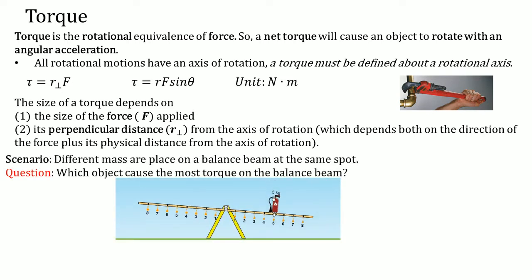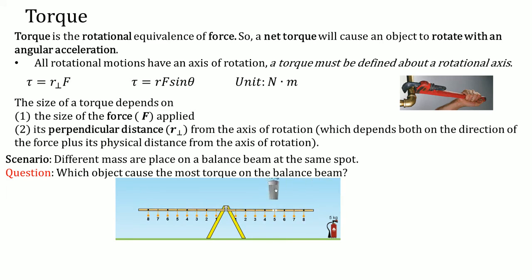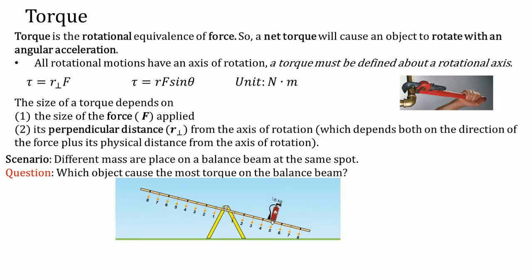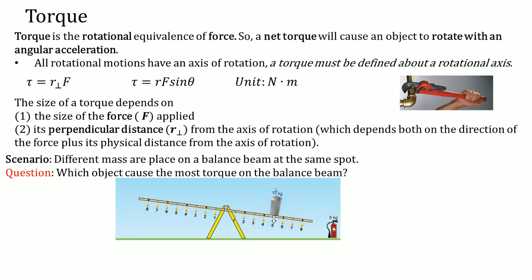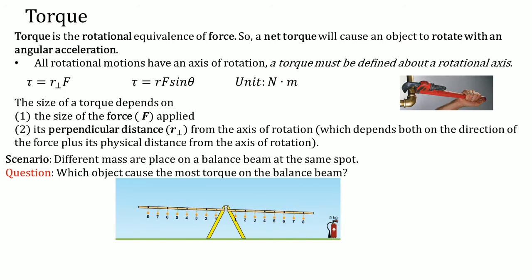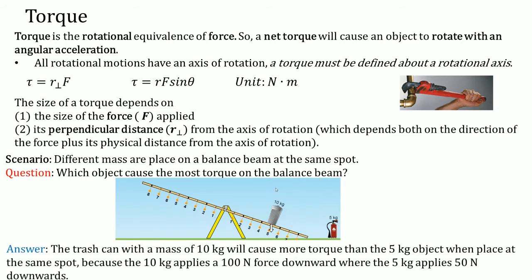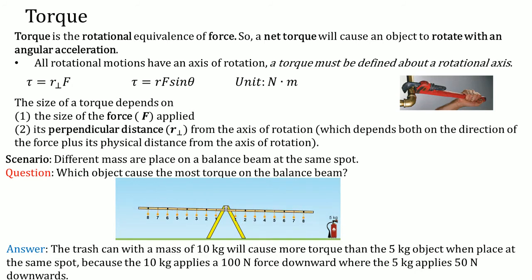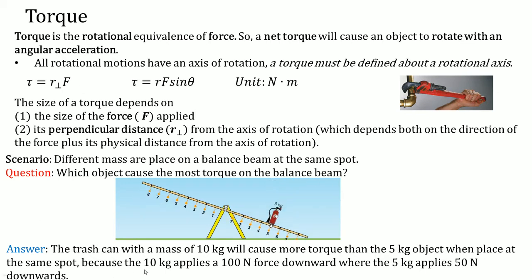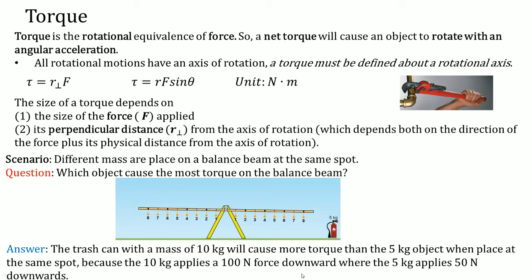Different masses are placed on a balance beam at the same spot. Which object will cause the most torque on the balance beam? The trash can placed at 10 kilograms is causing the balance beam to turn differently than the fire extinguisher, which is at 5 kilograms. At 10 kilograms it turns quicker — it has a larger angular acceleration — but the 5 kilogram causes a smaller angular acceleration. So you would say the trash can with a mass of 10 kilograms will cause more torque than the 5 kilogram object when placed at the same spot, because the 10 kilogram will apply a 100 Newton force downwards (10 kg × 10 for the gravitational field), where the 5 kilograms will apply a 50 Newton force downwards.